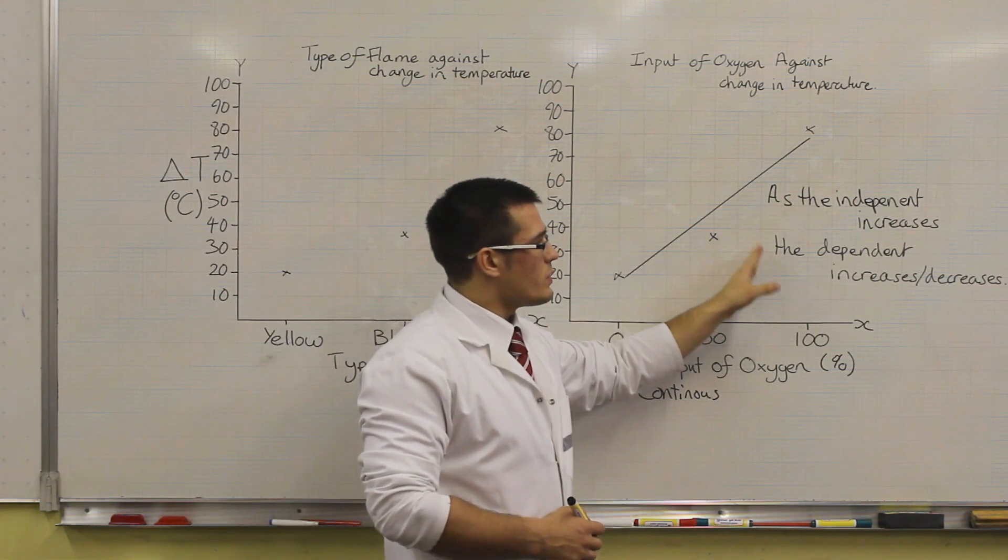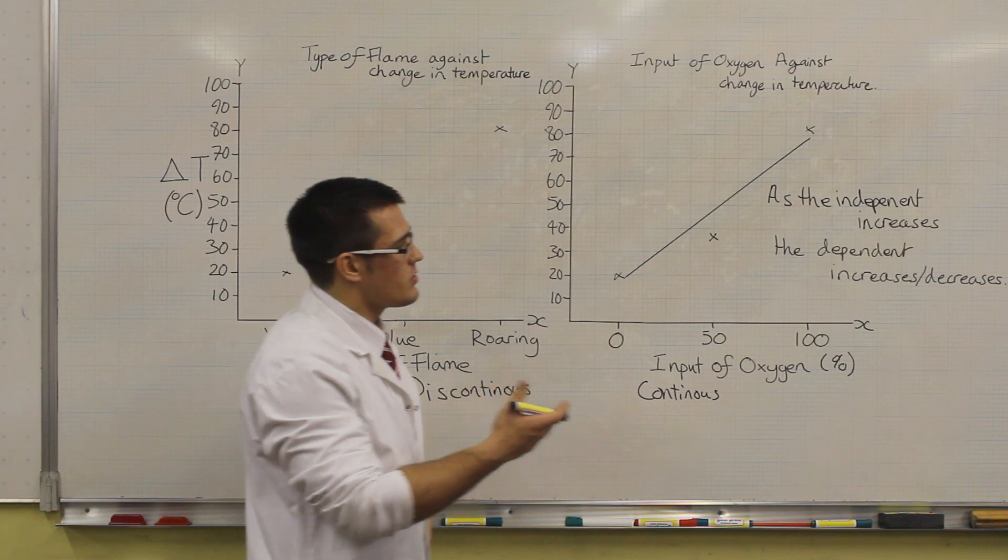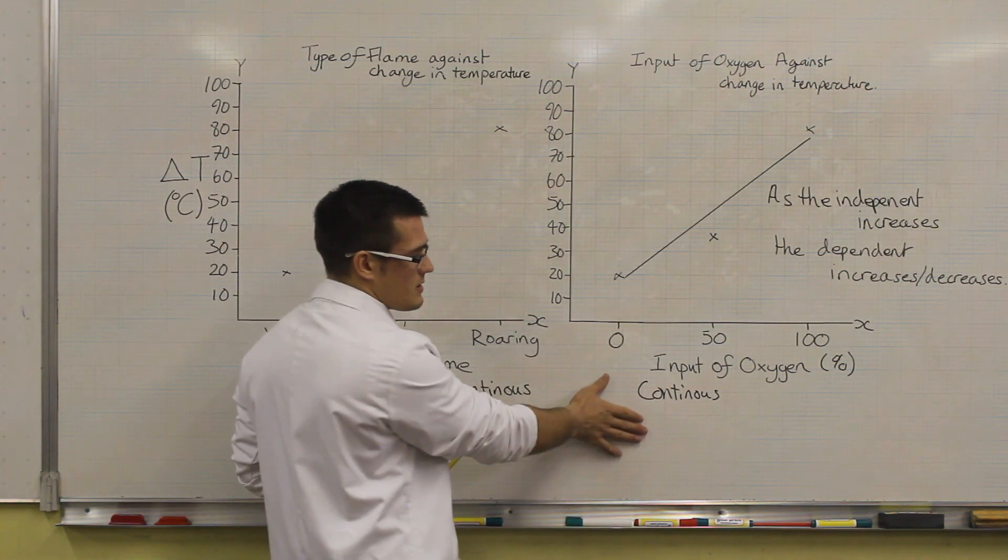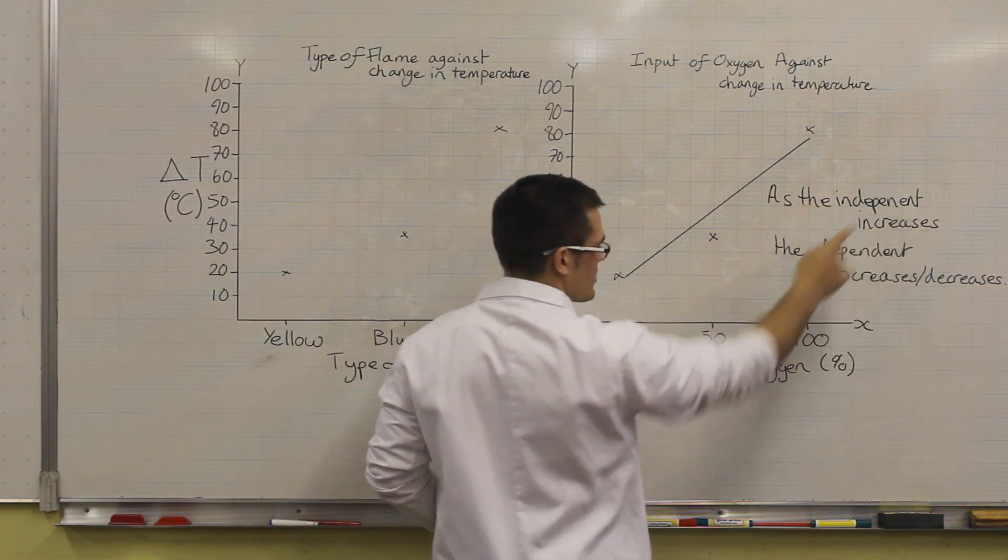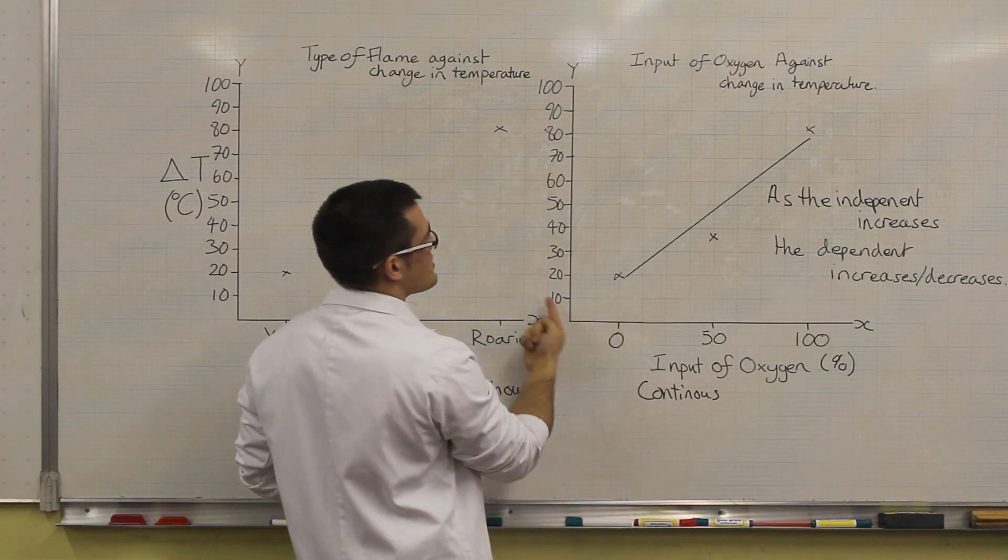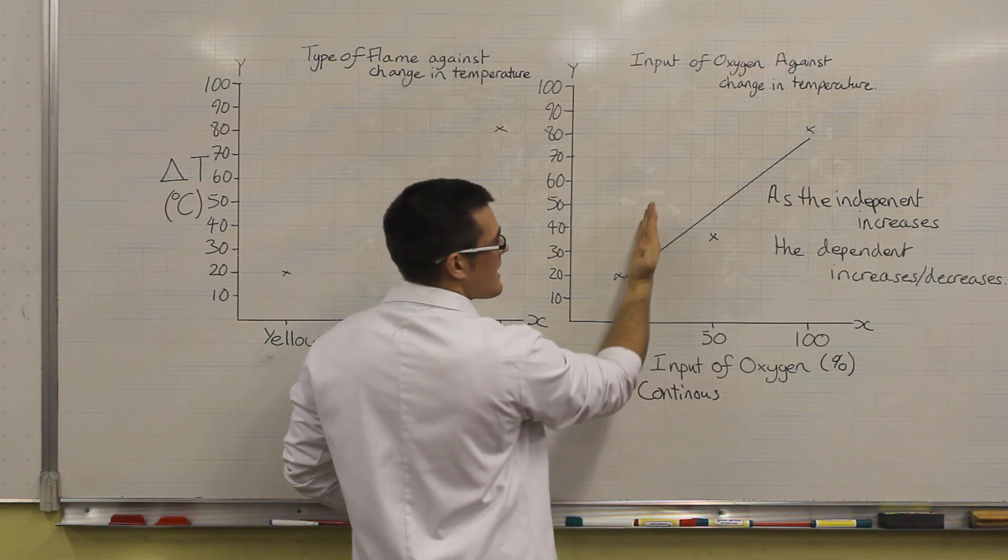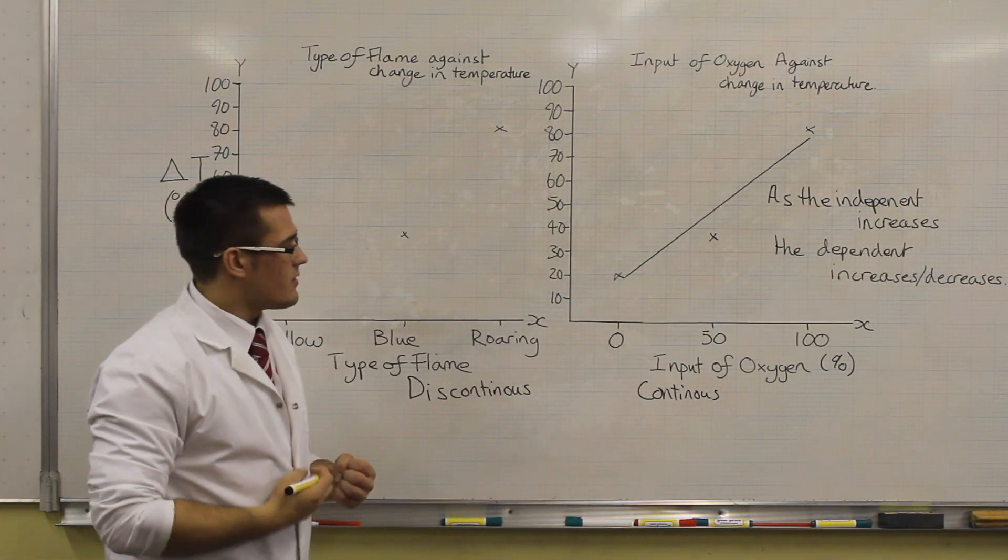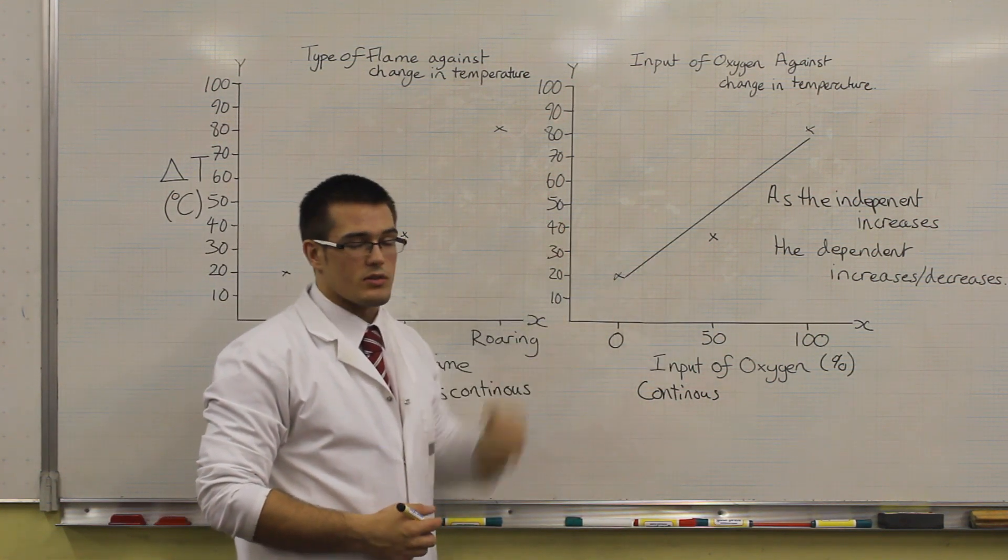When we're writing a trend, we can always write it in this format. We can say, as the independent increases, the dependent increases or decreases. Our independent in this investigation was the input of oxygen. So we can say, as the input of oxygen increases across the graph, the dependent, the change in temperature, if we look at the line, it clearly increases across the graph. So we could say, for our trend for this data, the input of oxygen increases, the change in temperature increases. If our data was the other way, then we could say it decreases.